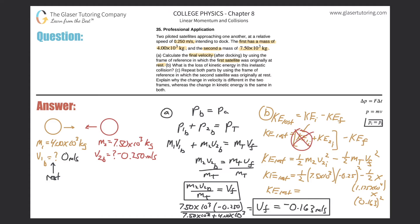After correcting the total mass value to 1.15 times 10 to the fourth, we calculate: 0.5 times 7.5 times 10 to the 3 times 0.25 squared, minus 0.5 times 1.15 times 10 to the 4th times 0.163 squared. This gives approximately 81.6 joules - that is the amount of kinetic energy lost in this inelastic collision.